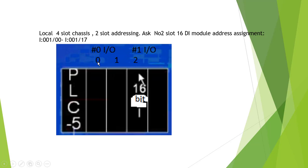Slot 2 is IO group number 1. So the terminal bits are 00 to 17 because we use octal numbers — from 00 to 07, and 10 to 17.